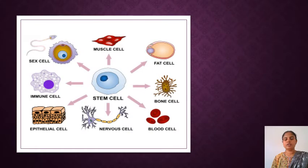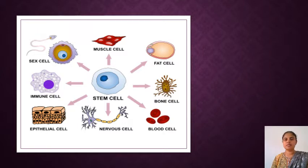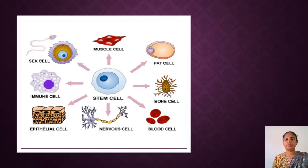In this figure, you can see stem cells being grown into different types of cells: muscle cells, fat cells, bone cells, blood cells, nerve cells, epithelial cells, immune cells (i.e., WBCs), and also sperm and egg cells.